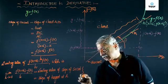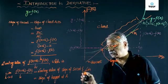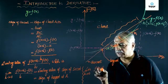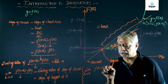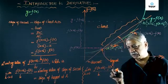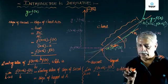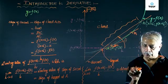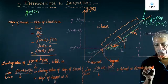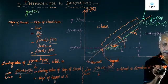Then, limit h tends to 0, f of x plus h minus f of x upon h is defined as derivative of f of x with respect to x.